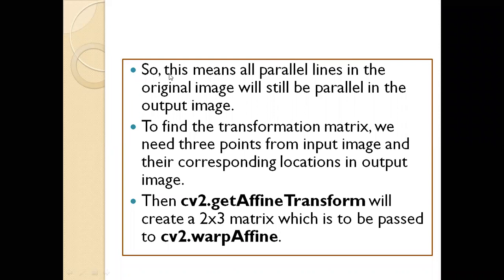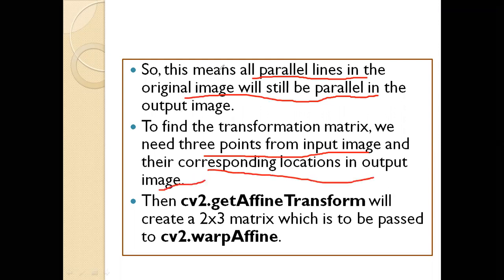In affine transformation, what actually happens is that all parallel lines in the original image will still be parallel in the output image after the transformation. And to find this transformation matrix, we need three points from the input image and their corresponding locations in the output image.